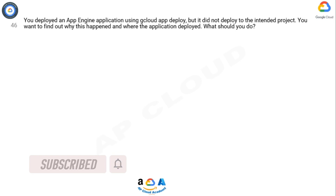Question. You deployed an App Engine application using gcloud app deploy, but it did not deploy to the intended project. You want to find out why this happened and where the application deployed. What should you do?